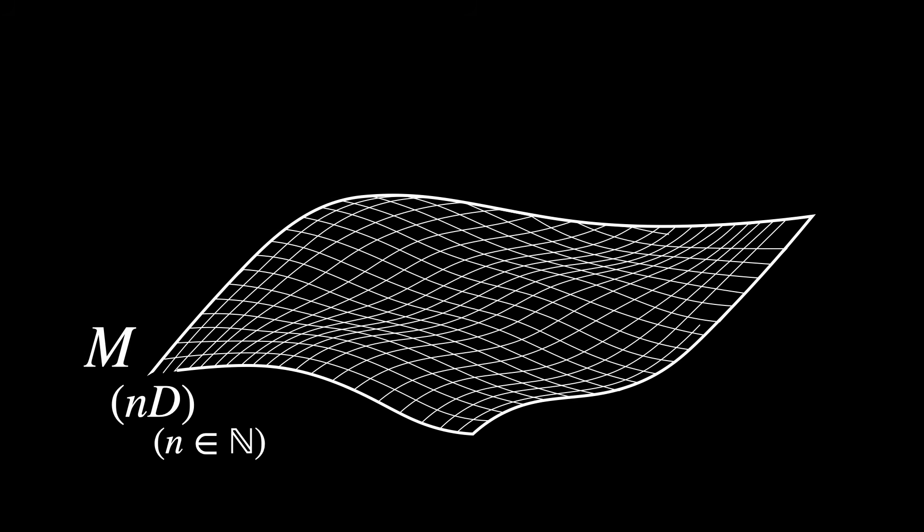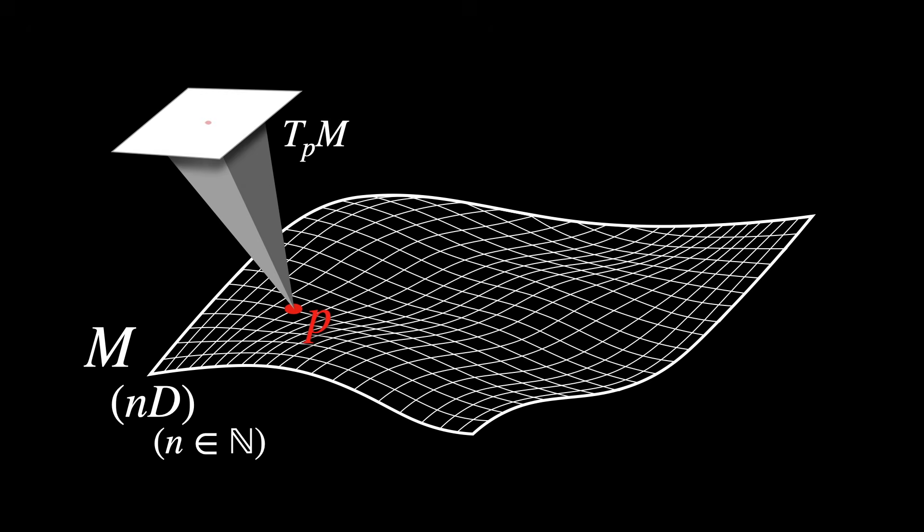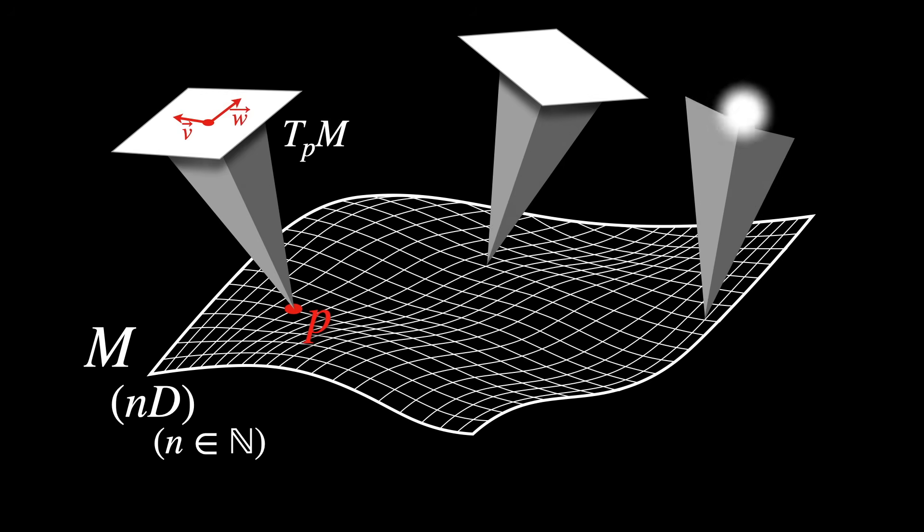Let's revisit the first step of the algorithm, Riemannian metric. Imagine a smooth manifold M in n dimensions. A Riemannian metric G is a map that assigns at each point P in the manifold M a way of measuring lengths and angles between vectors.